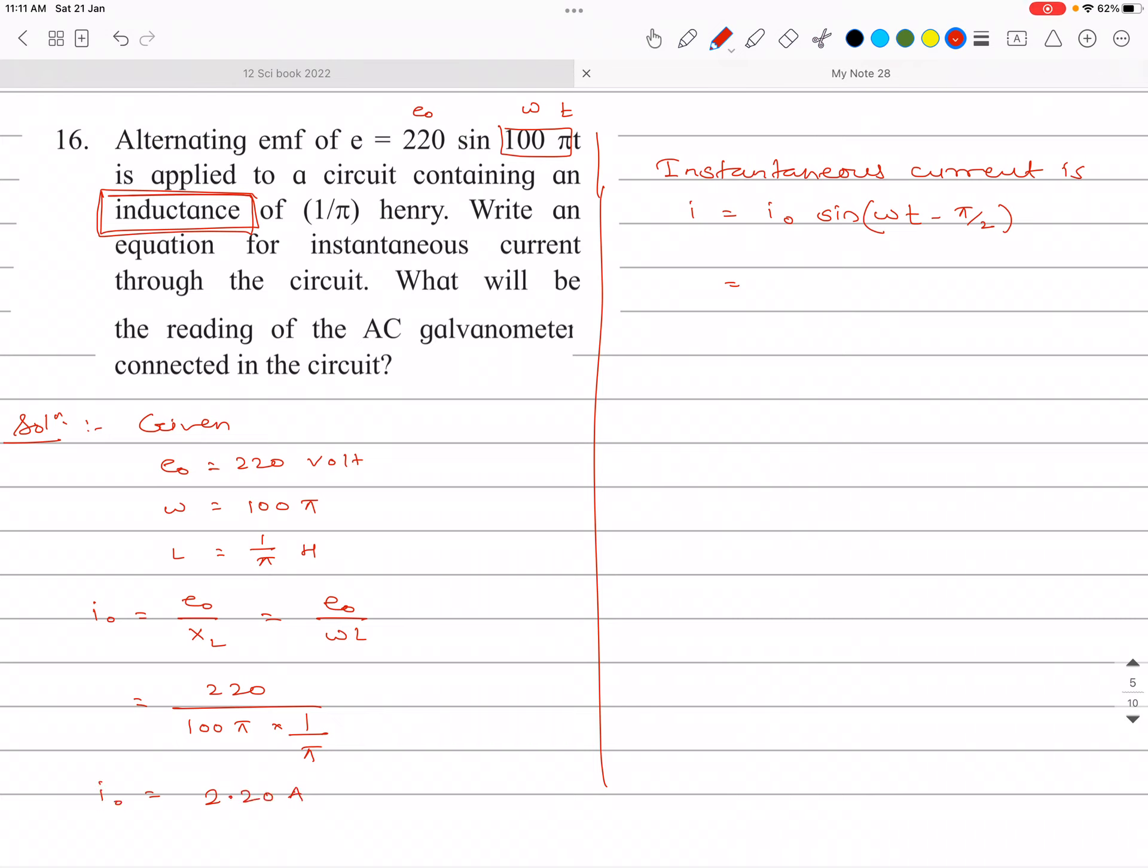Now substituting the peak value: I = 2.20 sin(100πT - π/2). This is the formula for instantaneous current.